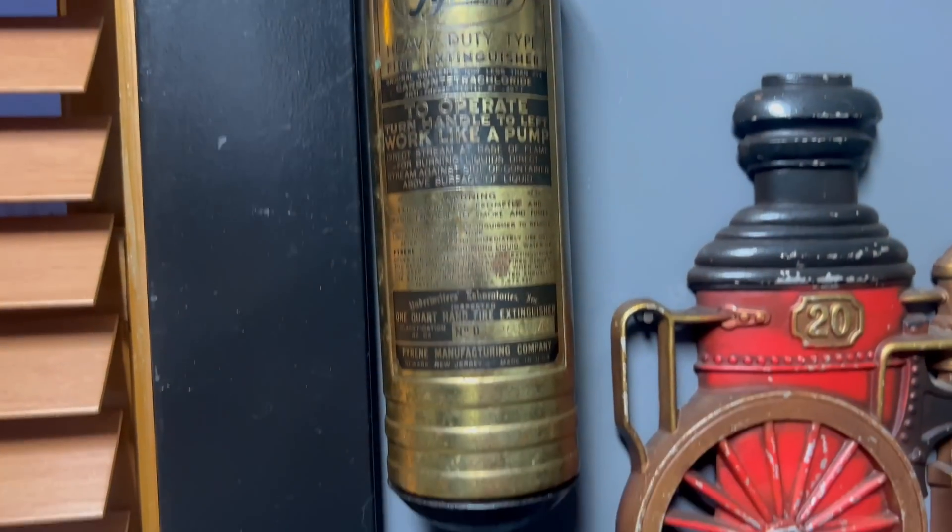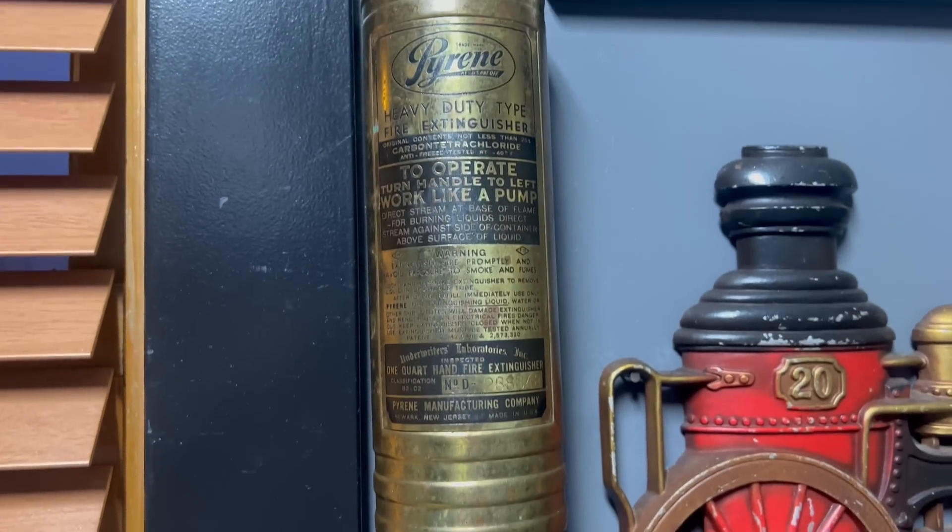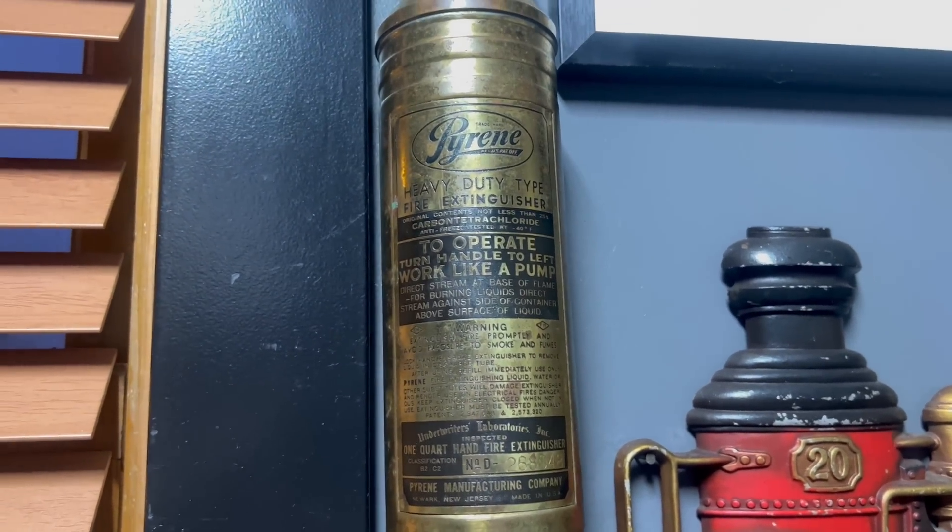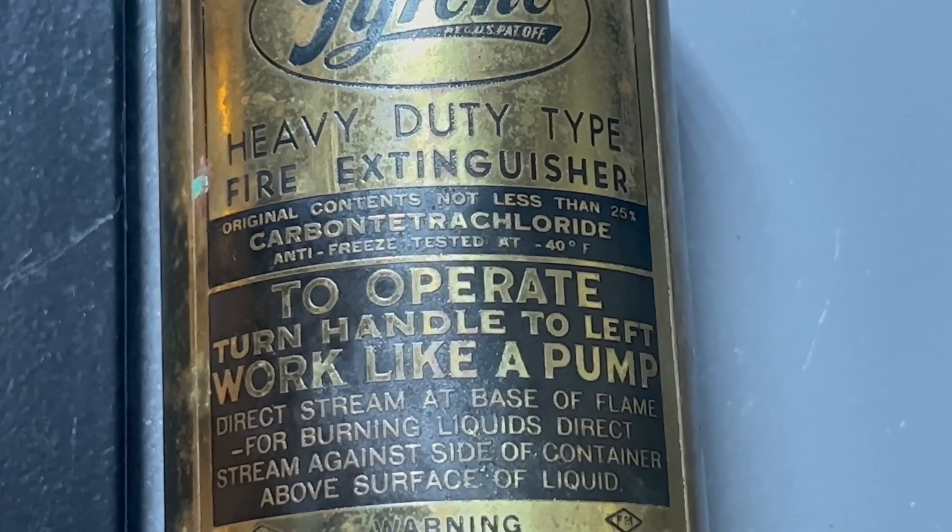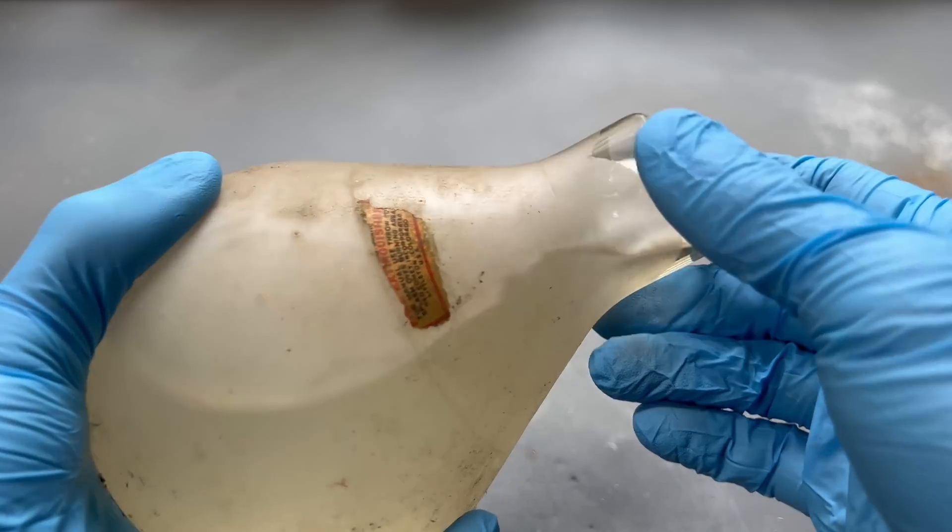A few different styles of extinguishers exist that contain carbon tetrachloride. The two main styles are a brass style, which is just a cancer squirt gun, and the other is the glorious fire extinguisher grenade.